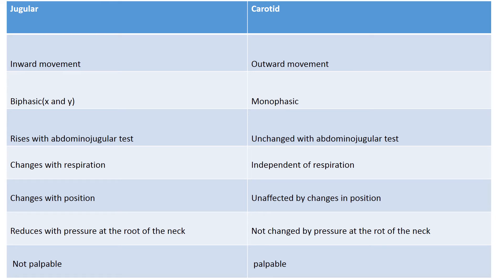Comparing JVP to the carotid pulse to differentiate them: the jugular venous pulsations are inward movements, whereas the carotid pulsations are outward movements. The jugular venous pulsation is biphasic, meaning it moves inwards twice, and you'll be able to see what corresponds to the X and Y descent, while the carotid pulse is monophasic. The JVP also changes with respiration and position, and it can be diminished by applying pressure at the root of the neck. The JVP is not palpable.